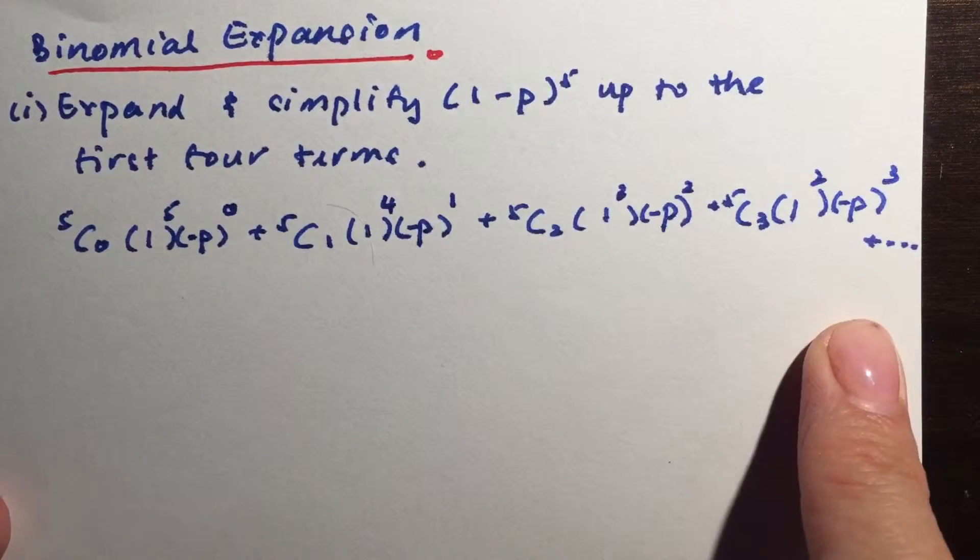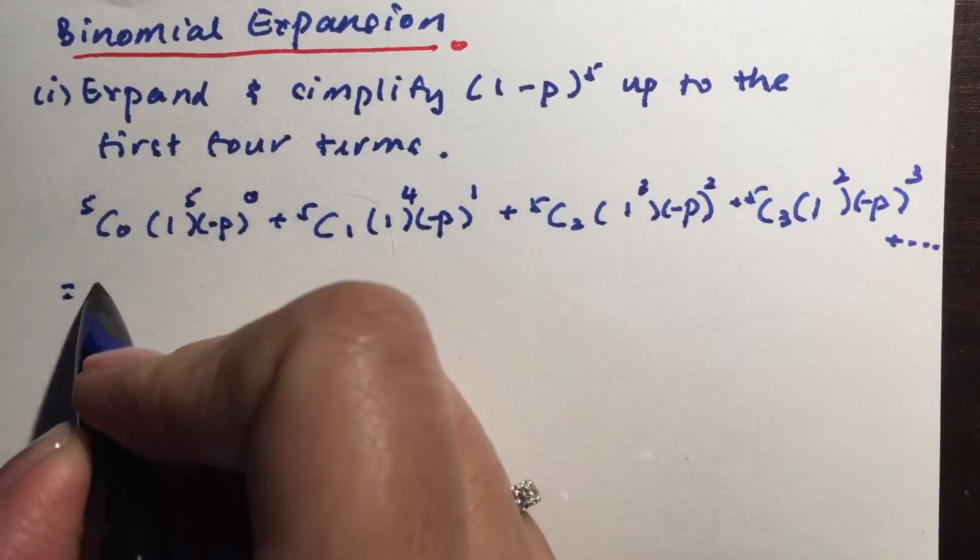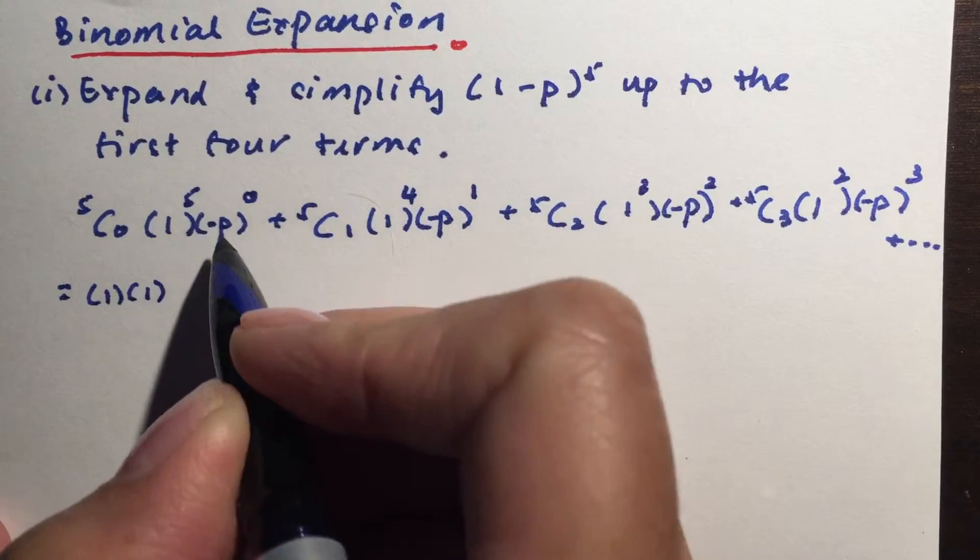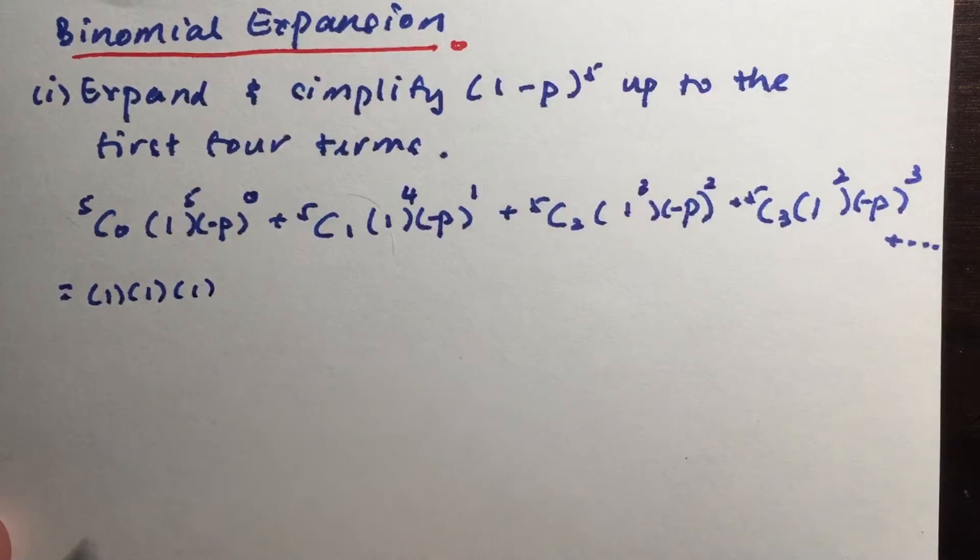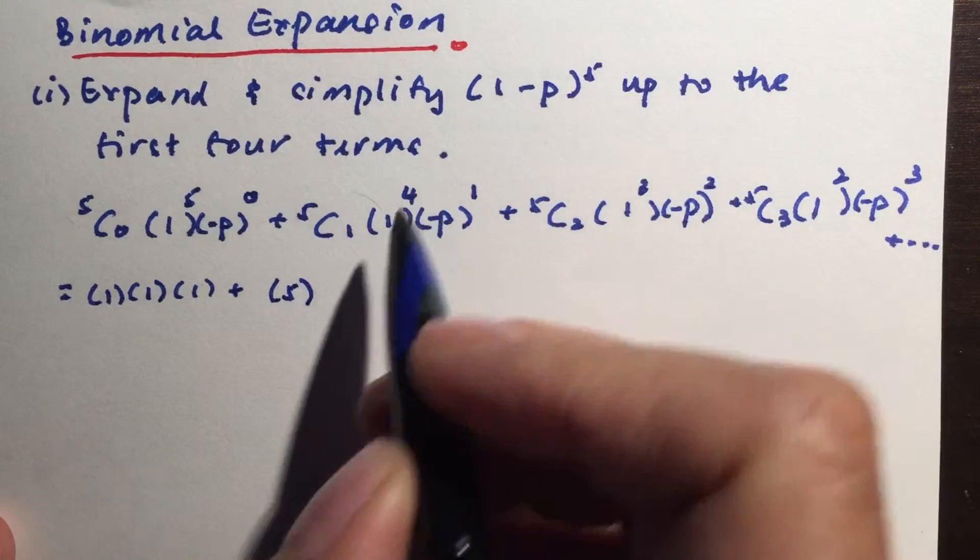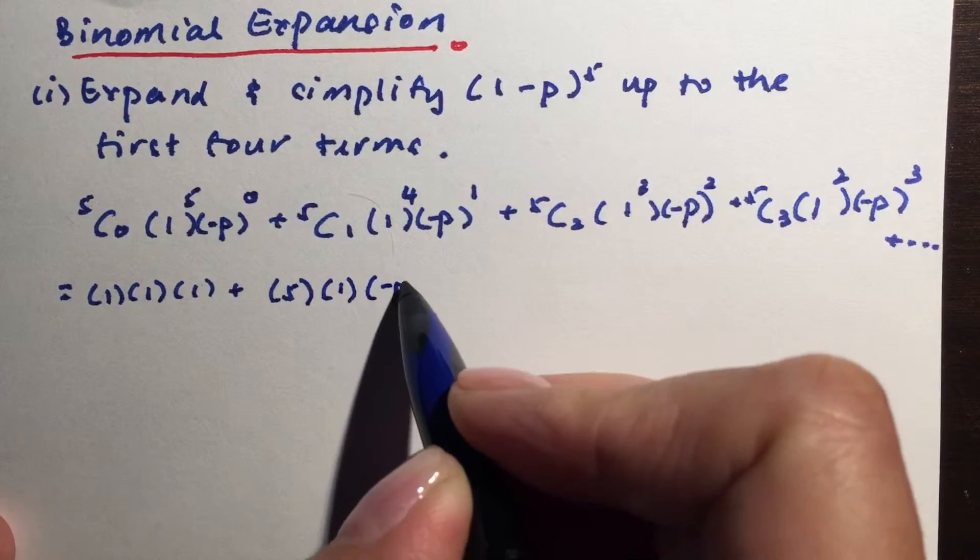Now all we have to do after this is just to simplify it. So we have 5 choose 0 is actually 1, 1 to the power of 5 is 1, anything to the power of 0 is also 1. And you can use your calculator if you're not sure about this, but 5 choose 1 will also give you 5. 1 to the power of 4 is just 1, -P to the power of 1 is just -P.